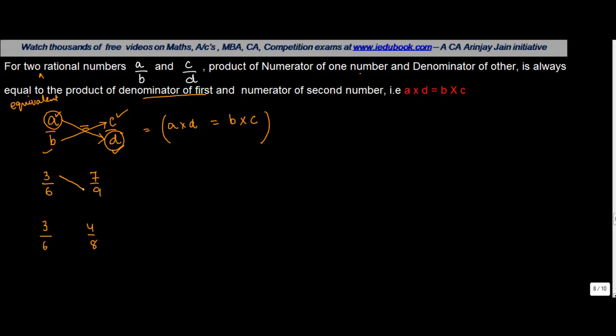Let's do the multiplication this way. Numerator of first, 3, into denominator of second, 9. Then denominator of first, 6, into numerator of second. If you do the multiplication, you get 27, and here you get 6 into 7 is equal to 42. But what do I note? These are not equal.